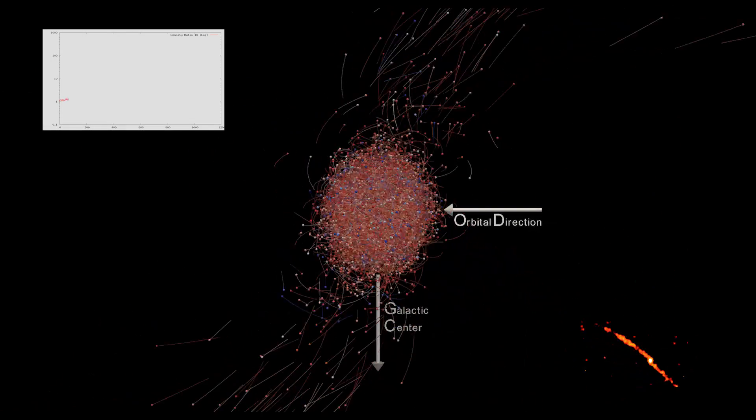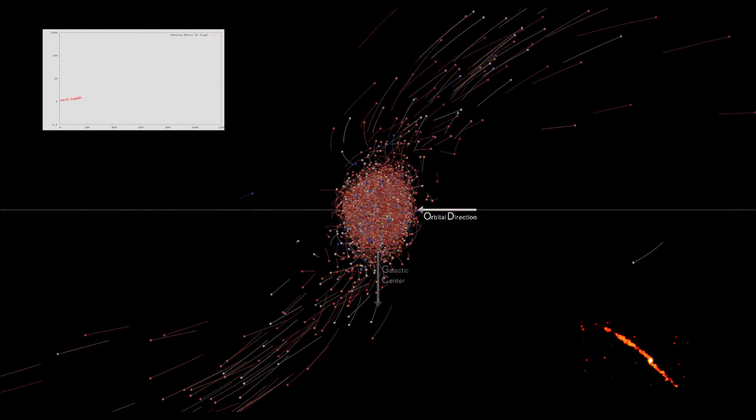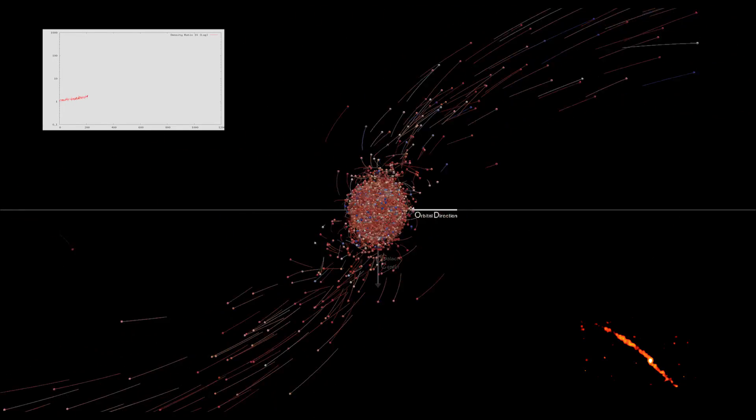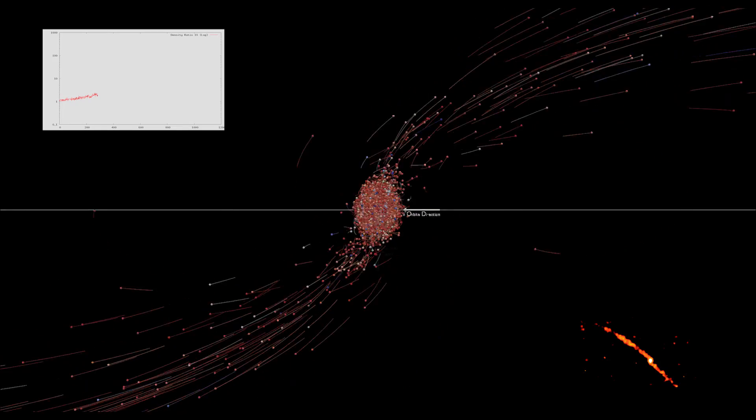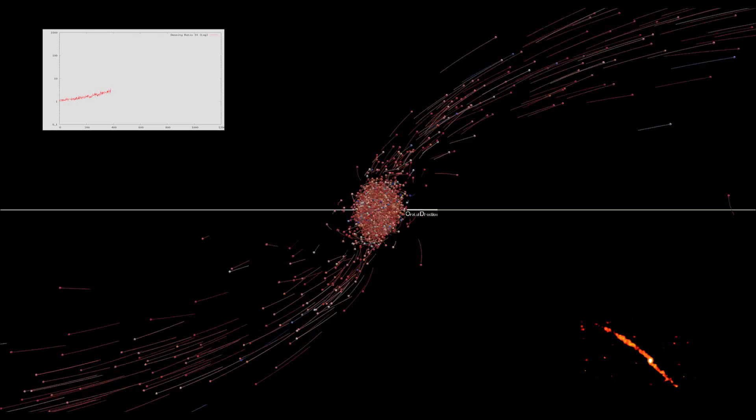As a cluster evolves, it slowly evaporates. This is a result of gravitational interactions with other stars in the system. Some stars gain enough energy to escape the cluster and populate the two tidal tails above and below the cluster.